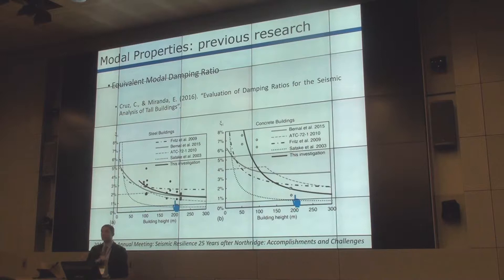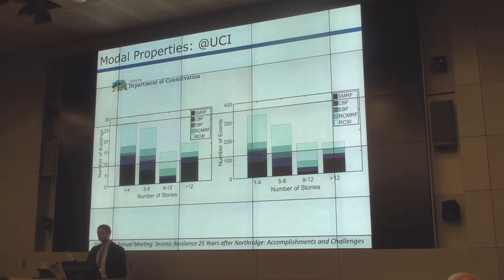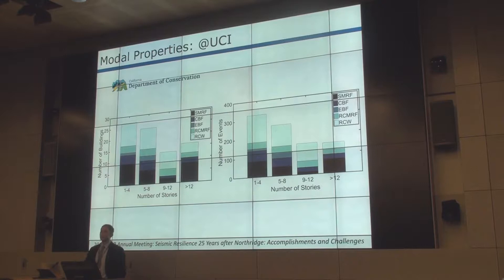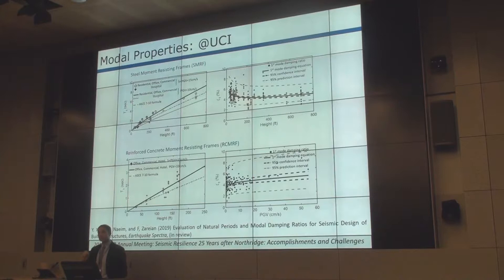Coming to the work that we have done, I'd first like to introduce the demographic of our buildings. The slide shows number of stories on the horizontal axis, number of buildings on the vertical axis on the left-hand plot, and number of events on the right. It's a pretty rich database with all sorts of lateral load-resisting systems: steel moment frames, reinforced concrete moment frames, and shear walls. Using this data, we came up with equations for damping and period, and the work is under review in a journal publication.